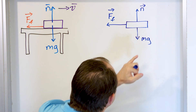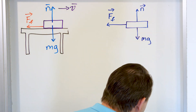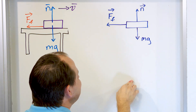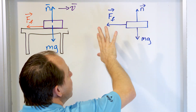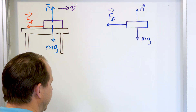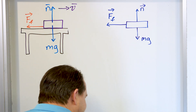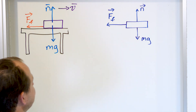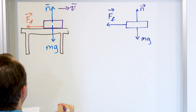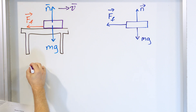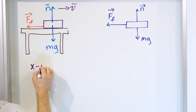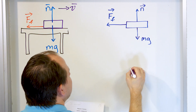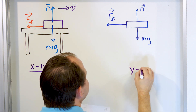There is no force pushing to the right because the book has already been released from your hand — at that moment there is no force going in that direction. This is the free body diagram. Let's learn a little more about it by talking about the x direction and the y direction.